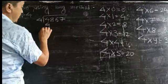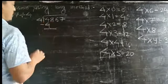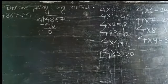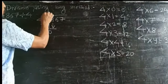4×1=4. Now subtract: 4 minus 4 equals 0. Now bring down this 8.